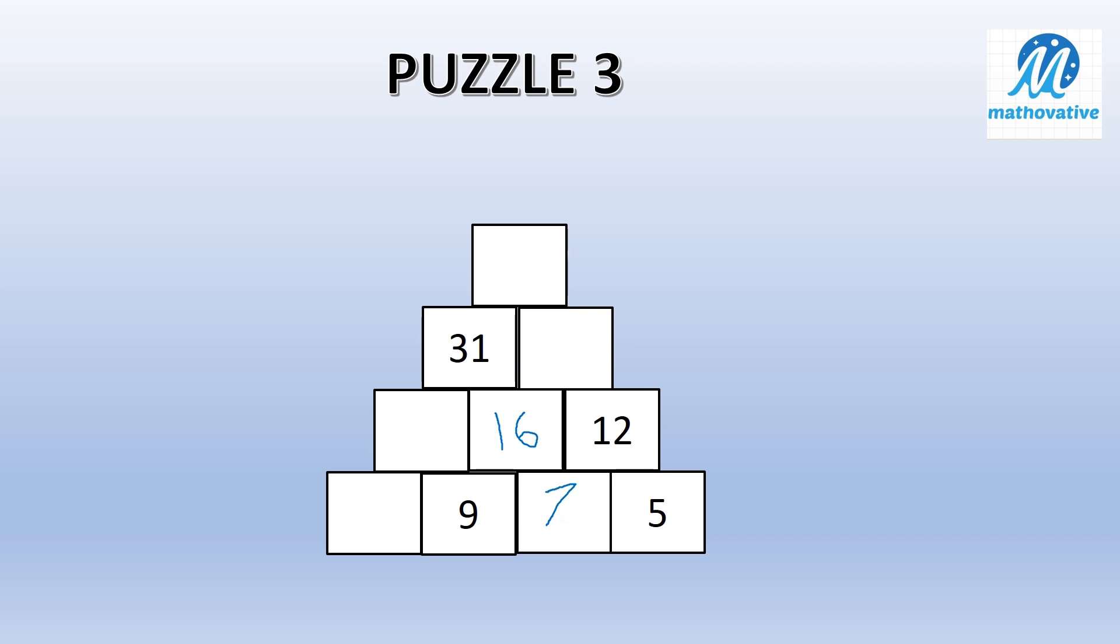Now we cannot put any number adjacent to 9 because the second row number is not given. So first we will find the second row number. So here we are getting 31 and one number is given, 16. So we can find another number, that is 15. Correct. So what will be added to 9 to give you 15? 6.